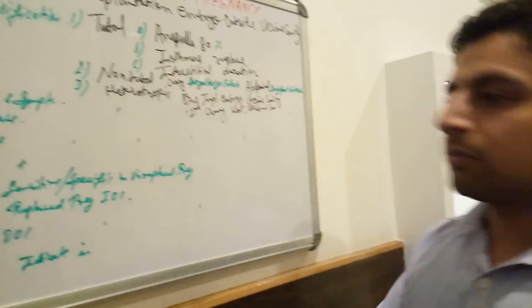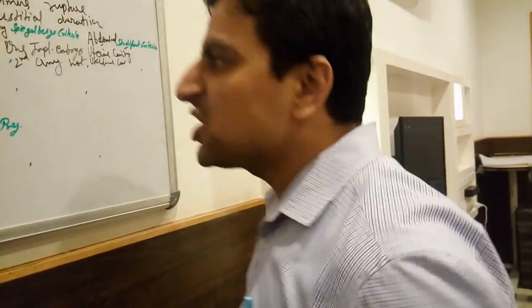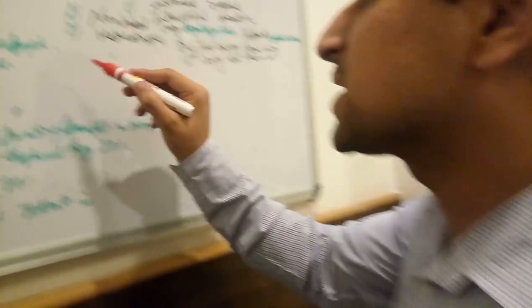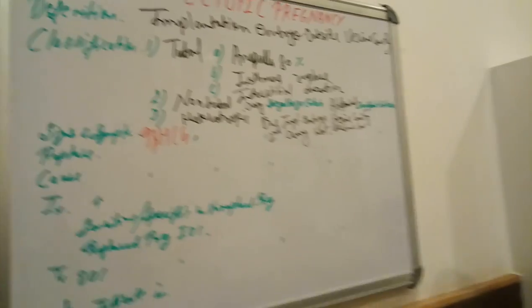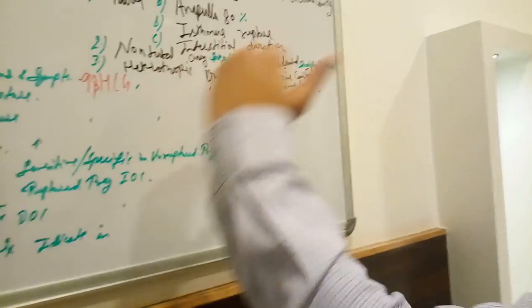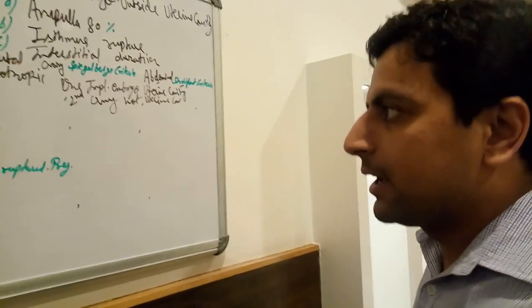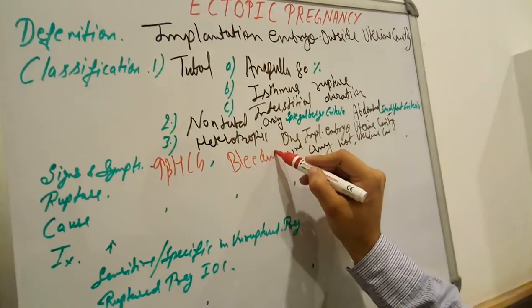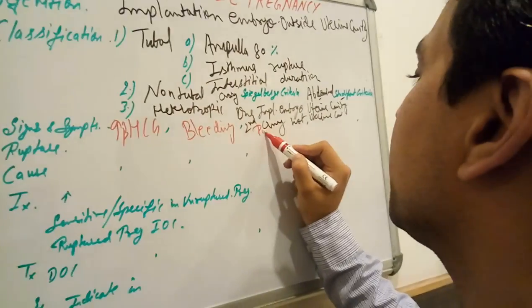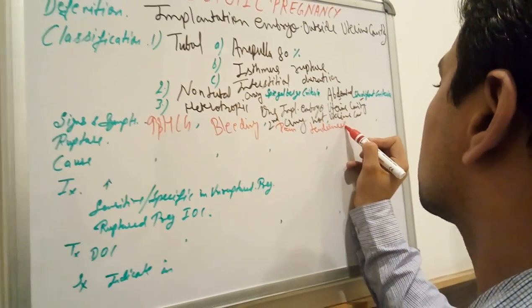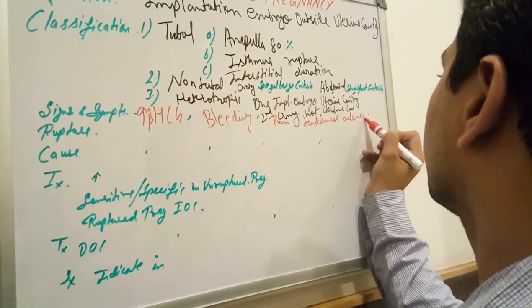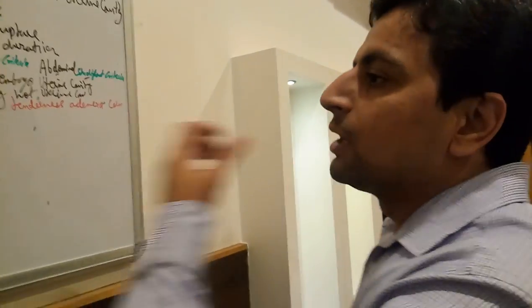Now the signs and symptoms of ectopic pregnancy: since it is a pregnancy, the most common sign is increased beta-hCG — human chorionic gonadotrophin hormone increases, just like in a normal pregnancy. Other signs include pervaginal bleeding, pain, and adnexal tenderness. Also cervical tenderness. Other symptoms include nausea and vomiting, but pain and bleeding are the most common.